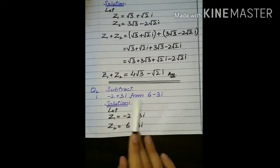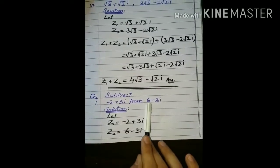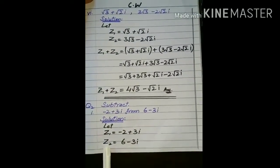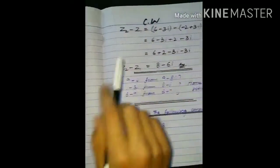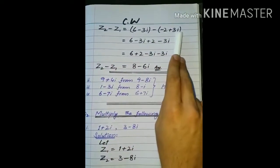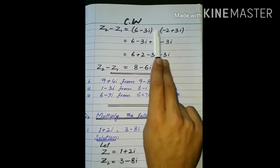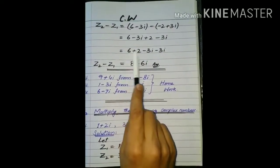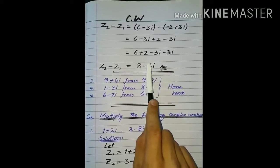Next ہمارے پاس subtraction کا question ہے: subtract minus 2 plus 3 iota from 6 minus 3 iota۔ اس نمبر سے یہ والا نمبر subtract کرنا ہے۔ پہلے ہم نے name دیے — minus 2 plus 3 iota کو Z1 اور 6 minus 3 iota کو Z2۔ تو Z2 minus Z1 لکھا ہے۔ Z2 کی value لکھی پھر minus پھر Z1 کی value۔ parenthesis ہٹانے پر minus اندر multiply ہوگا تو sign change ہو جائیں گے۔ arrange کریں گے تو real part real کے ساتھ اور imaginary part imaginary کے ساتھ آ جائے گا۔